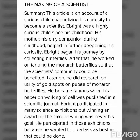Abright began his journey by collecting butterflies. He worked on tagging the monarch butterflies so that the scientific community could be benefited. Later on, he did research on the utility of gold spots on the pupa of monarch butterflies. He became famous when his paper on the working of a cell was published in a scientific journal.